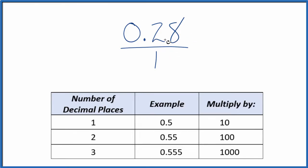We need to get this to be a whole number. I can see we have two decimal places. Two decimal places means we're going to multiply by 100. So we multiply the numerator by 100, and 100 times 0.28 equals 28.